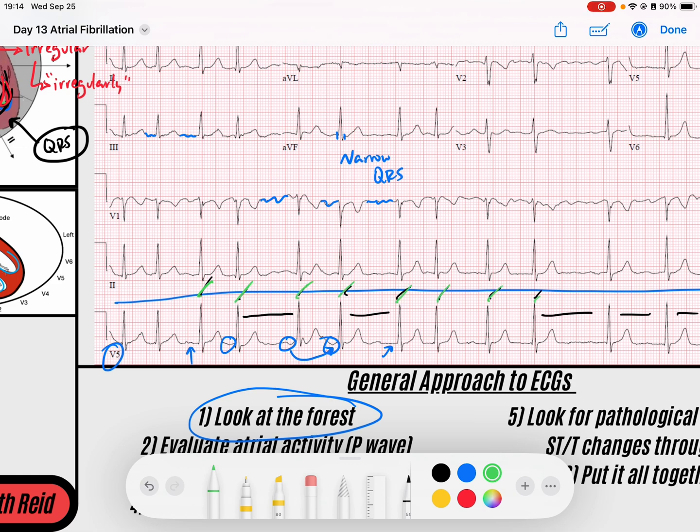We would see a P wave. In the setting of a rhythm that is irregular, there's no regularity to how irregular it is, meaning that I can't identify a pattern like an AV block. This tells me narrow QRS, irregular irregular rhythm, this is atrial fibrillation.